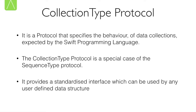The collection type protocol specifies the behavior expected out of our data collections by the Swift programming language. The collection type protocol itself is a special case of the sequence type protocol, which specifies the behavior of data structures that hold data in a sequential manner. The collection type protocol is what we will use to describe the interface of user-defined data structures.